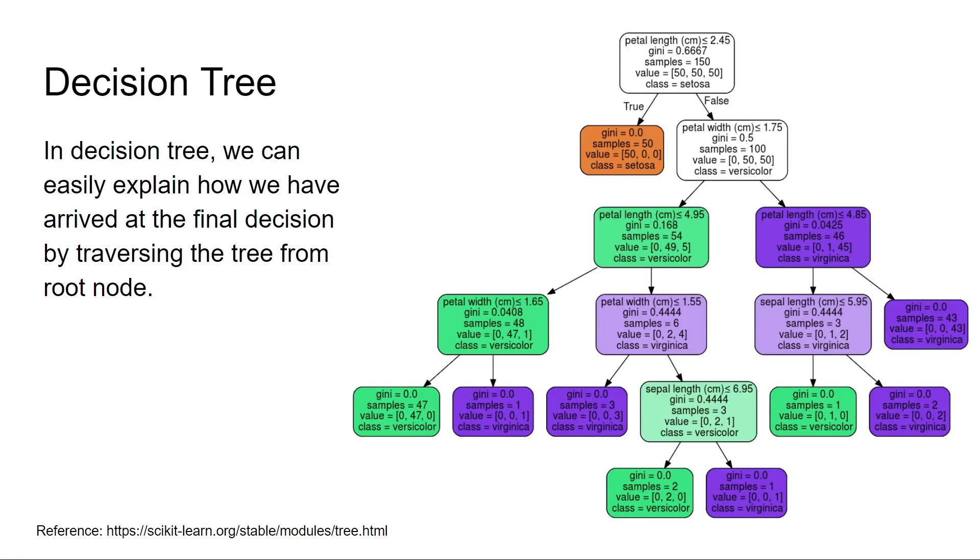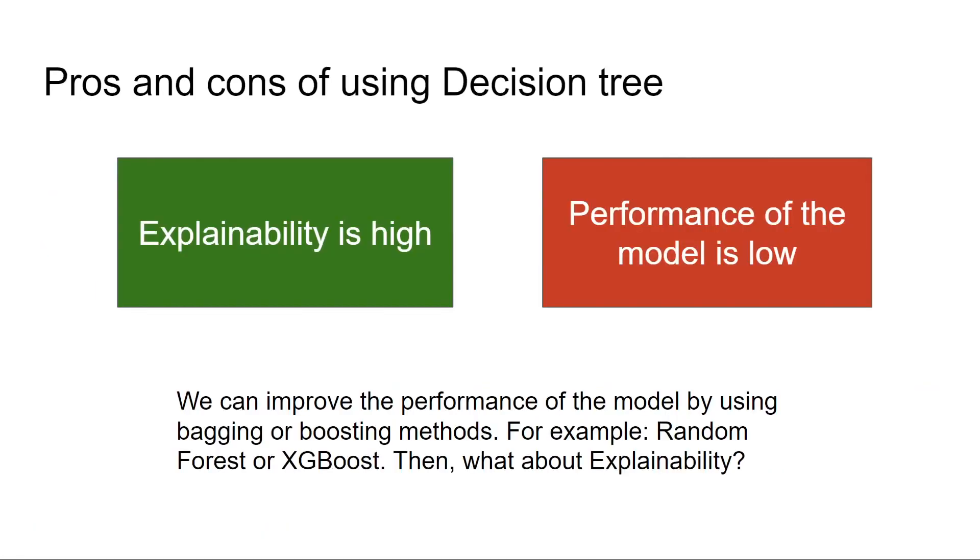But there are pros and cons of everything, right? So we have pros and cons for using decision trees as well. The explainability is very high—we can easily explain why this is predicting one of the classes. But the performance of the model is low because this is a simple decision tree.